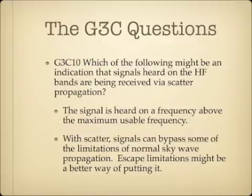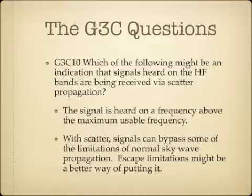Which of the following might be an indication that signals heard on the HF bands are being received via scatter propagation? The answer is the signal is heard on a frequency above the maximum usable frequency. If you're receiving a signal above the MUF, a bit too far for ground wave, and not quite far enough for sky wave, it's probably coming via scatter. Scatter allows signals to bypass some limitations of normal sky wave propagation.